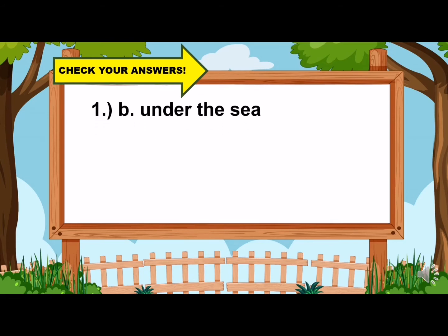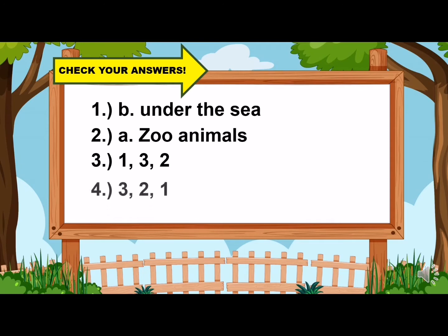For number 1, the correct answer is letter B, under the sea. Number 2: letter A, zoo animals. For number 3, the correct order is 1, 3, and 2. For number 4, we have 3, 2, and 1. And for number 5, the correct answer is 2, 1, and 3. Did you get all your answers right? Very good! Did you enjoy our first activity? Do you now have an idea of what you will be learning in this instructional video? Great!